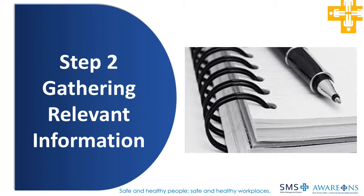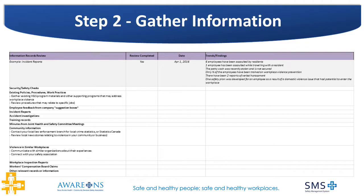Step 2 deals with gathering relevant information. This step of the risk assessment tool deals with determining what relevant information is needed to be gathered for the assessment. At this point, all relevant documentation should be gathered and provided to the assessors or assessment team so that they can review documents for reports of incidents involving workplace violence. The Step 2 tab provides the assessment team with a generic list of information that an organization may need to consider, and also consists of fields where the team can record what and when information was reviewed and the findings and trends of the information reviewed.